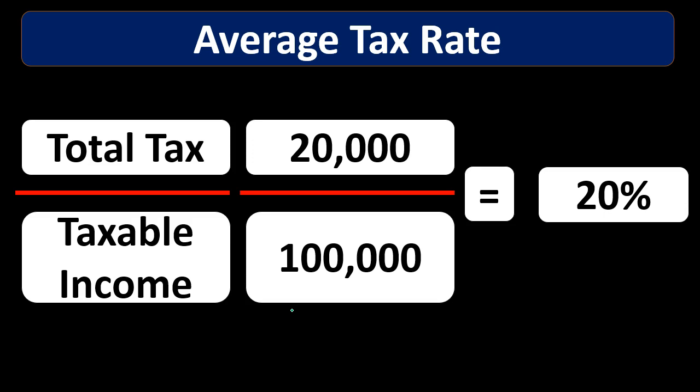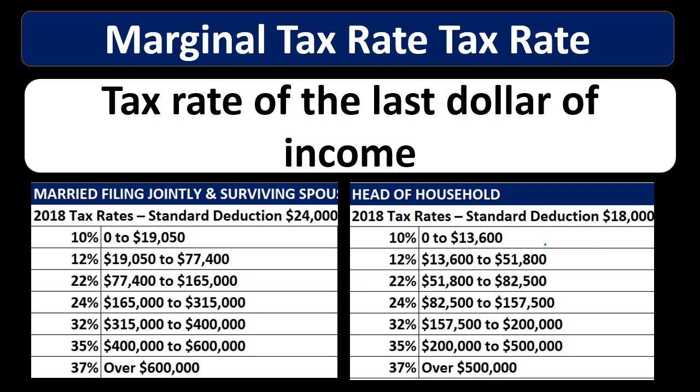However, the average doesn't help as much with tax planning when we're thinking about an increase in income, because the next dollar we make is not going to be taxed at 20% — it's going to be taxed at whatever the highest bracket is. So in a progressive tax system, we also need to know the marginal tax rate, which is simply the tax rate on the last dollar we earn.